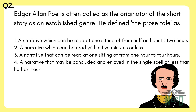Edgar Allan Poe is often called the originator of the short story as an established genre. He defined the prose tale with these options: 1) a narrative which can be read at one sitting of from half an hour to two hours; 2) a narrative which can be read within five minutes or less; 3) a narrative that can be read at one sitting of from one hour to four hours; 4) a narrative that may be concluded in a single spell of less than half an hour. The answer is 1: a narrative which can be read at one sitting of from half an hour to two hours.